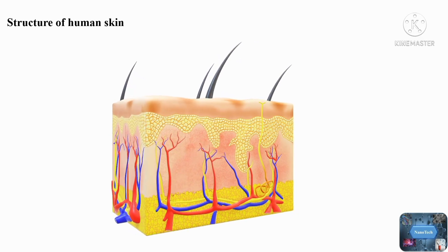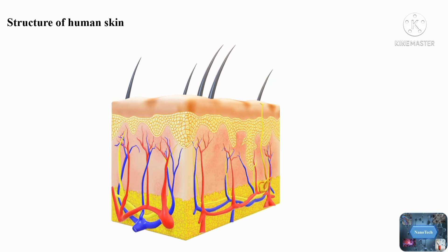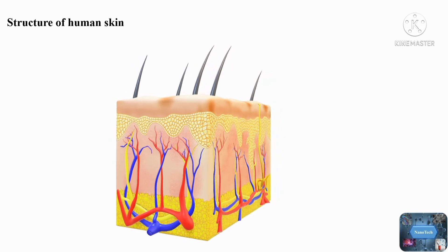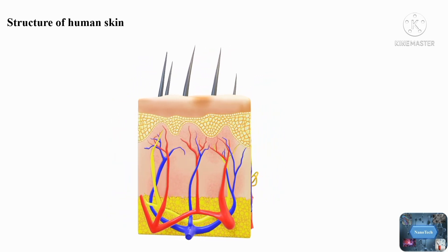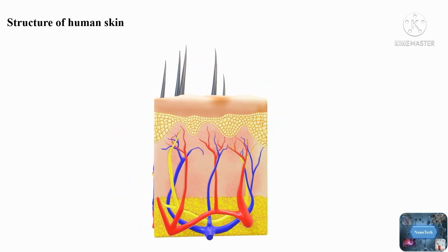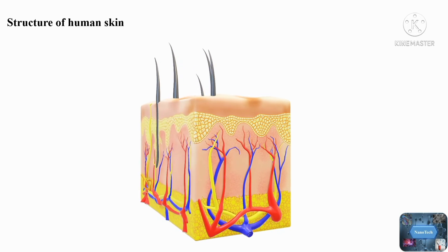The second layer is the dermis. The dermis is further classified into two types based on its distance from the epidermis, known as the papillary region and the reticular region.